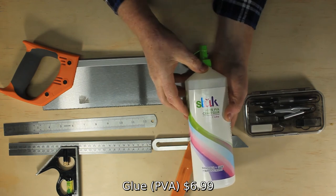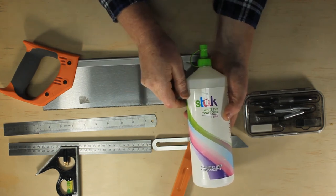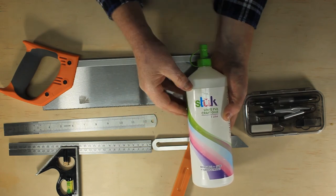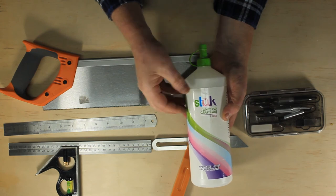For our purposes it doesn't matter if our PVA glue is labeled craft or wood. The difference in dry glue strength between craft and wood grades is minimal, and unless it's an expensive specialty type you can't use PVA glue for outdoor projects that will get wet anyway.